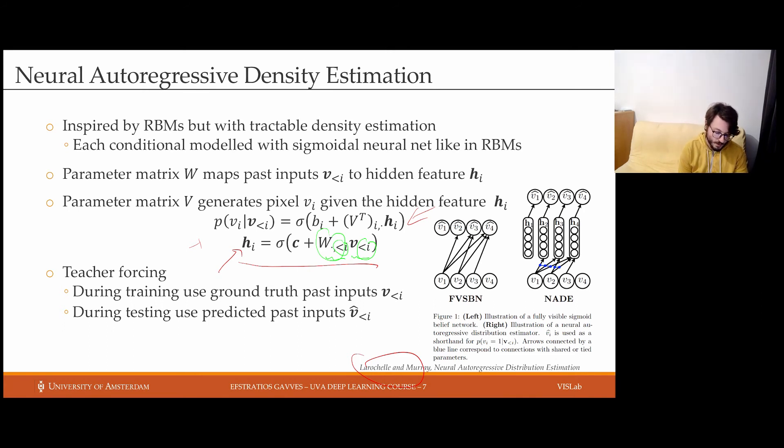Similarly, when we are using this hidden state to sample the new pixel, or the new output dimension i, we are only using the i-th row of our parameter matrix V, which means then that the rows of our parameter matrix V are weights that correspond or that they parameterize the sampling of future values for each dimension separately.